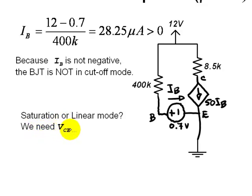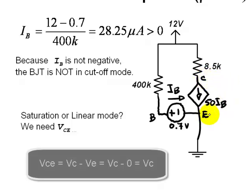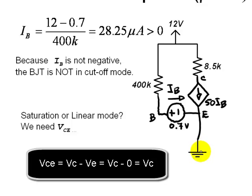To answer that question, we need VCE. We need the voltage between collector and emitter. Because the emitter is connected to the reference node, VC is directly VCE.